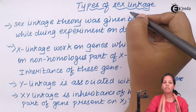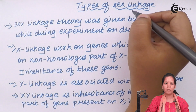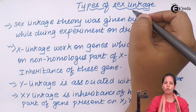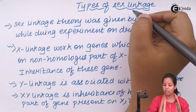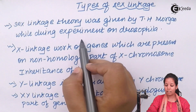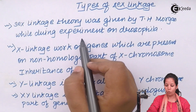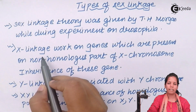Types of sex linkage — the sex linkage experiment is a very famous experiment done by Morgan on Drosophila, in which he analyzed the different kinds of sex linkages. The different kinds of linkage observed were X linkage, Y linkage, and XY linkage.